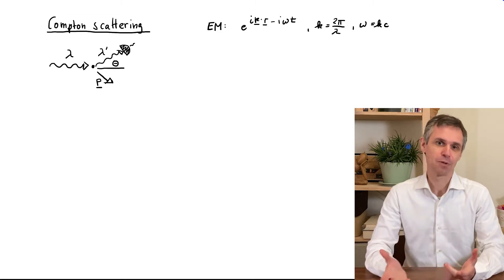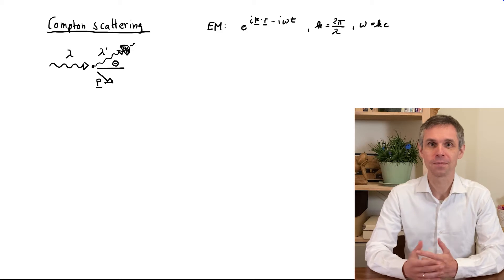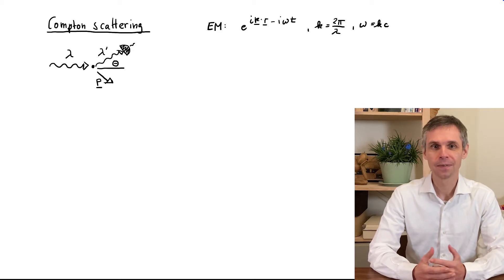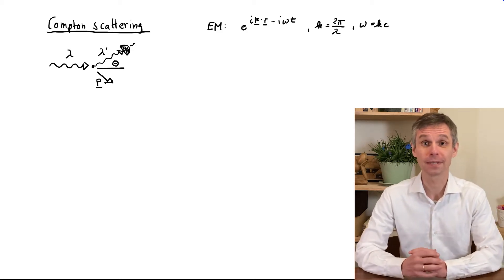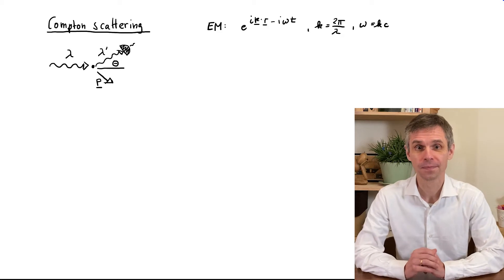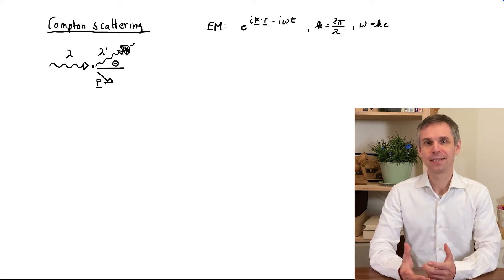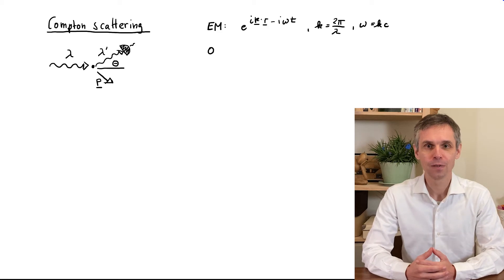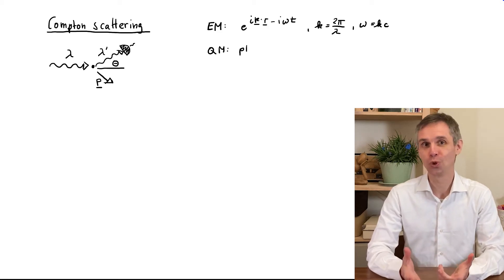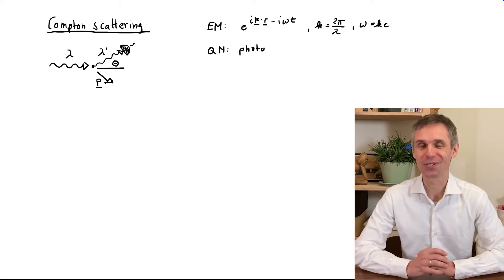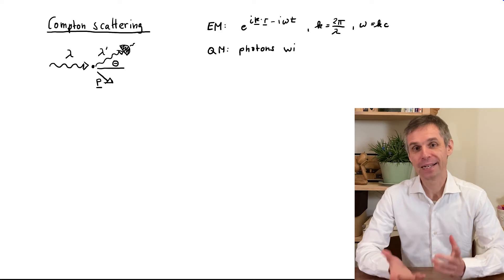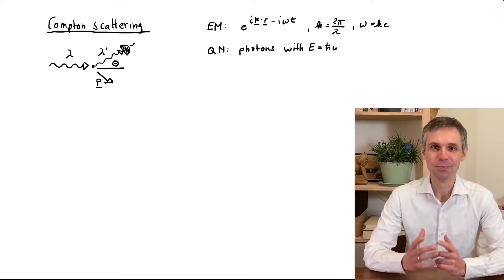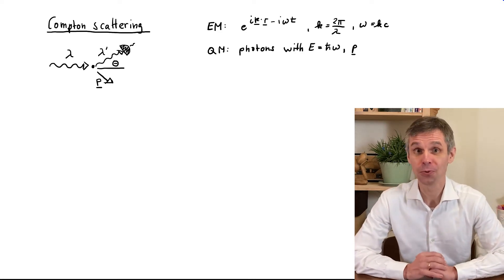In particular, this type of classical wave scattering, known as Thomson scattering, depends on the intensity of the light, which does not apply to Compton scattering. However, we can find a consistent explanation of this phenomenon when we assume that the light is composed of photons, with an energy given by the Planck rule and a momentum given by the de Broglie rule.